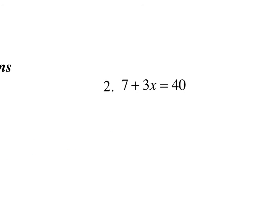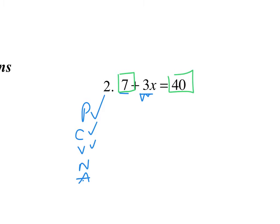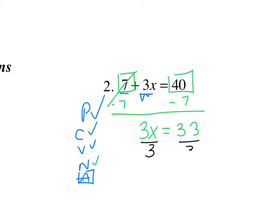Now let's go on to our next example. PCVNA. Do I have parentheses? Nope. Can I combine my 7 and my 3x? Nope. Are all my variables on the left-hand side? Yes, my 3x is over here, nowhere else. Are my numbers on the right-hand side? No — I still have a 7 over here. So I subtract 7 from both sides. Cancel. I get 3x equals 33. All my numbers are now on the right-hand side. I get rid of the multiplied-by-3 by dividing by 3 on both sides, and I get x equals 11. That's your final answer.